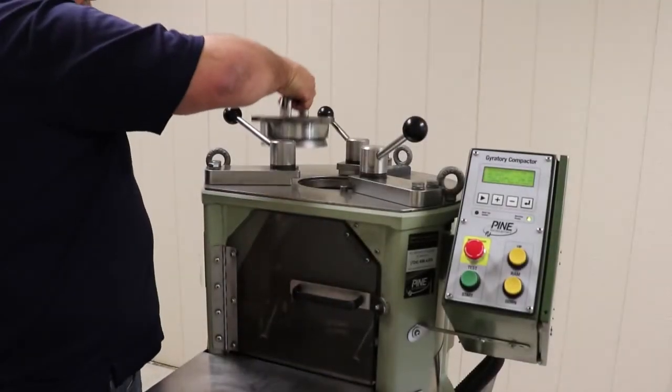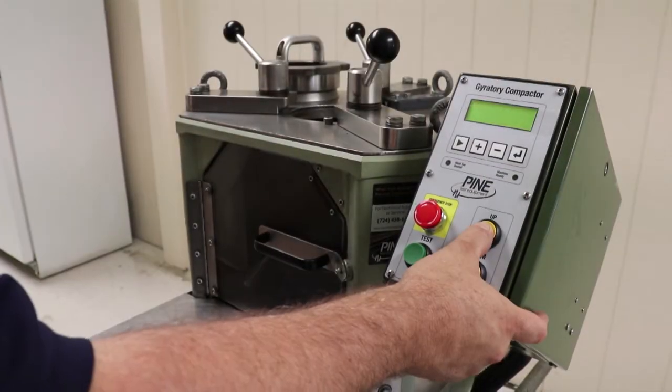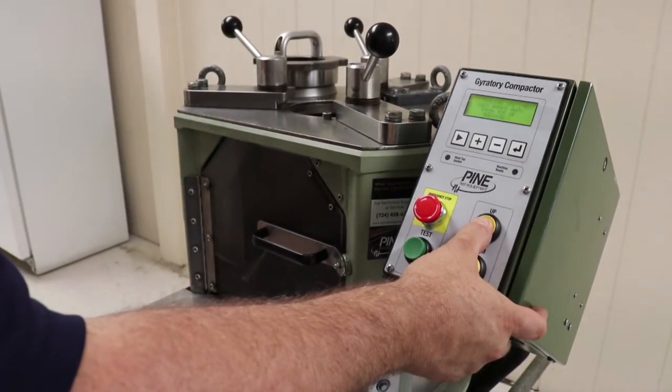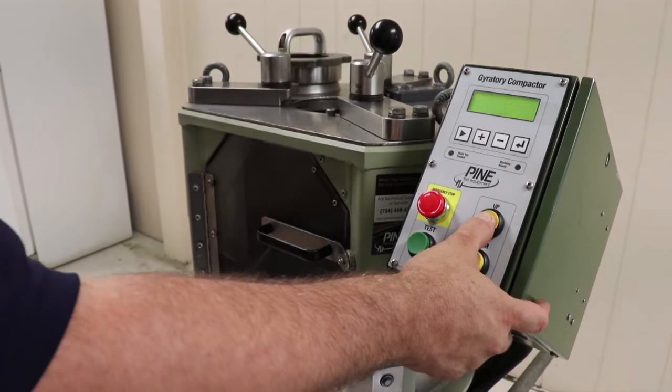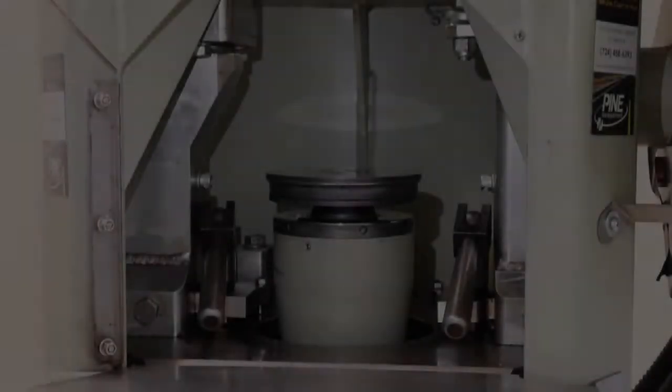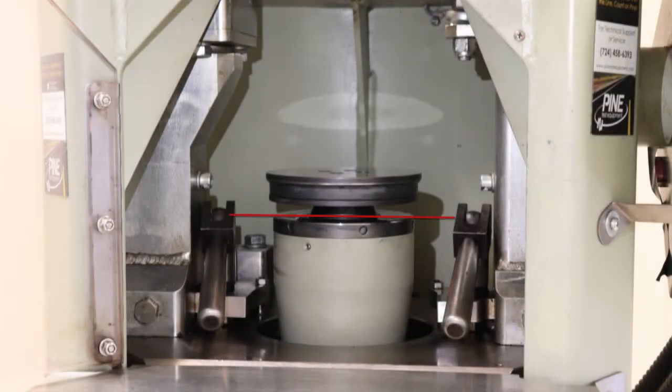You will then remove the mold top. With the compaction chamber door closed, depress the RAM UP button to raise the RAM until the gap in the RAM foot assembly is level with the top of the mold clamp handles.